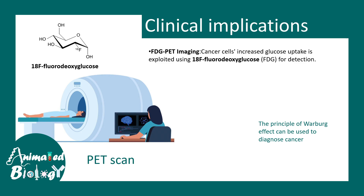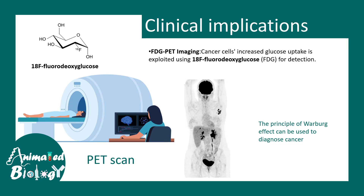Here you can see a tumor tissue would take up a lot of glucose. Don't forget about that blotch — that is the brain, which takes up a lot of glucose, which is why you see a blotch around the brain region. But near the breast region you can see a tumor where it is not expected to be that dark, and this is a clear sign of a tumor.